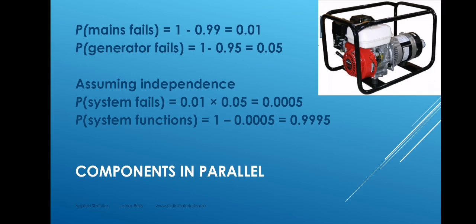We calculate the probability of failure for the mains, which is 0.01, 1 minus 0.99. The probability of failure for the generator is 0.05, 1 minus 0.95. And the probability of failure for the system, assuming independence, is the product of those two numbers: 0.01 by 0.05 is 0.0005. That's the probability that the system fails. And therefore, 1 minus that number, 0.9995, is the probability that the system functions. It's the system reliability.